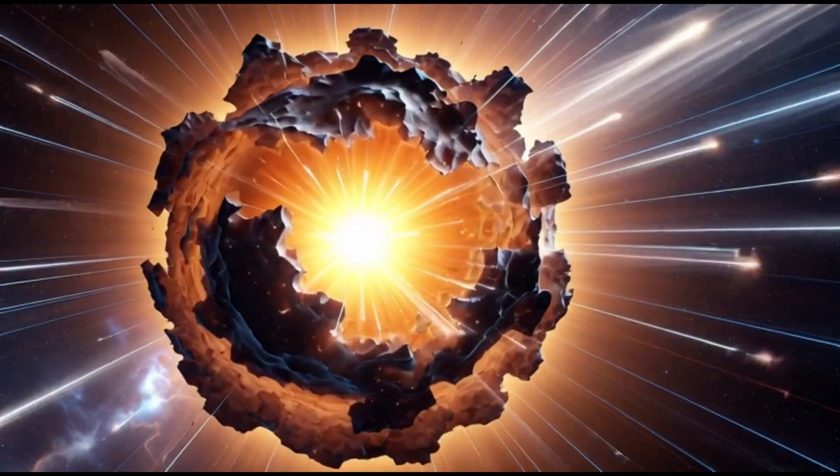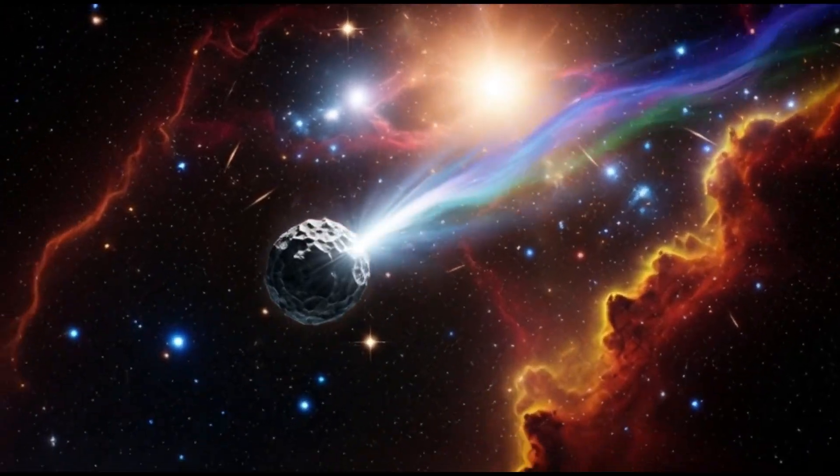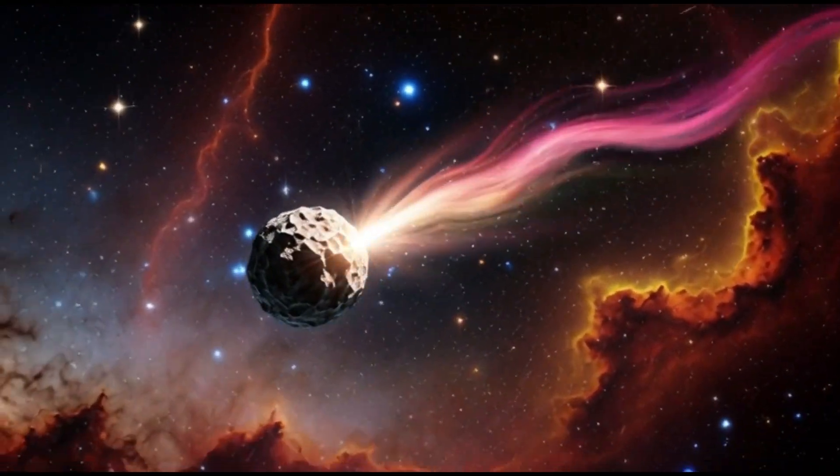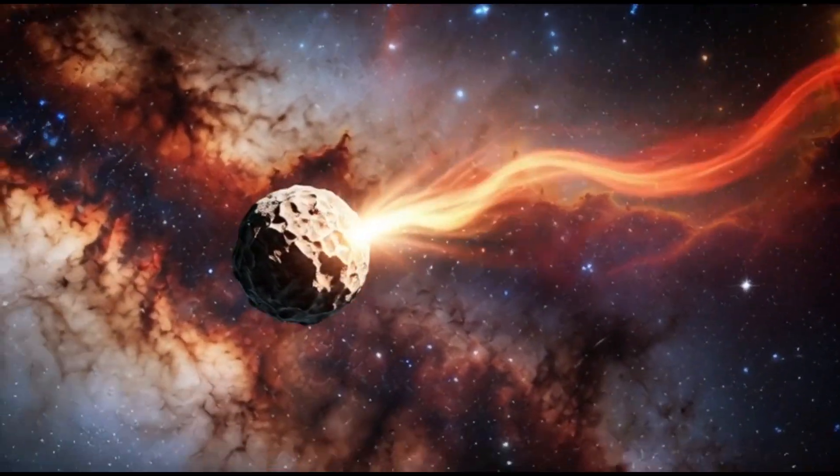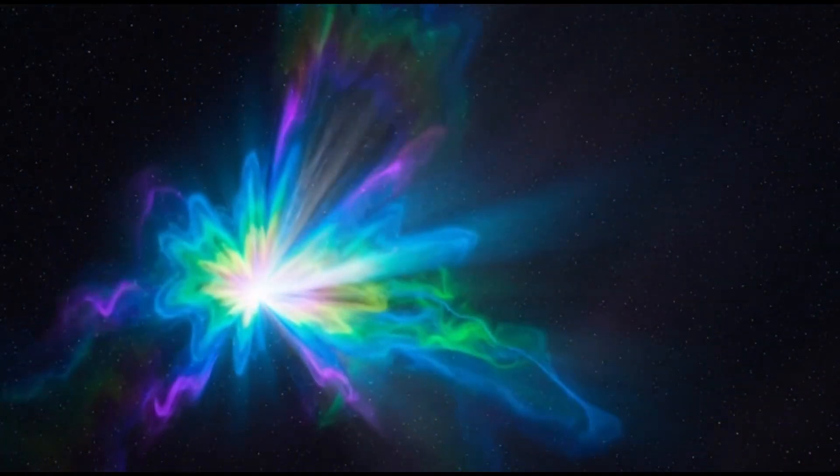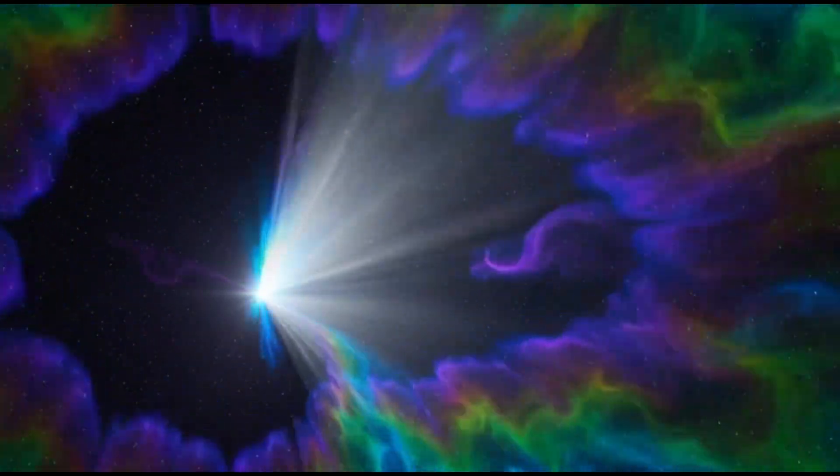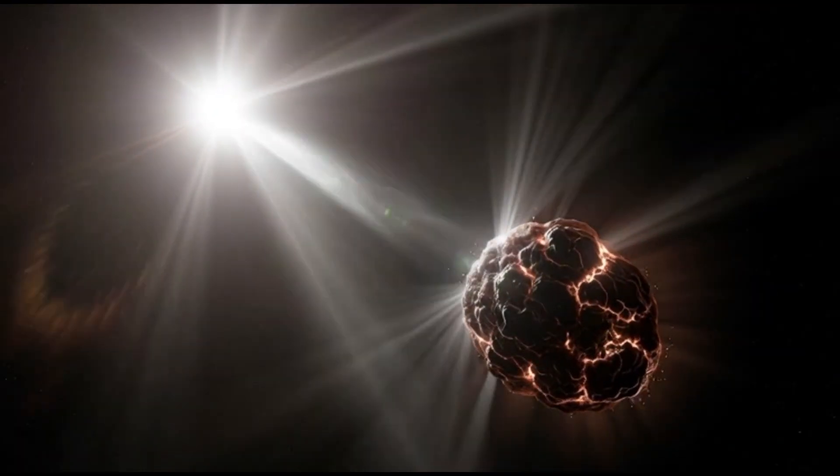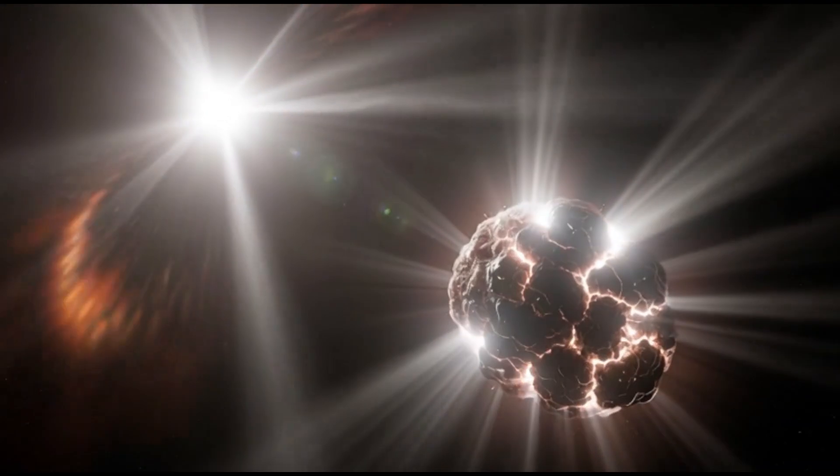But weeks later, astronomers realized something chilling. This wasn't one of ours. The object, now called 3i Atlas, came from deep interstellar space, older than the Sun itself. And from the very beginning, it refused to behave like any comet ever recorded.